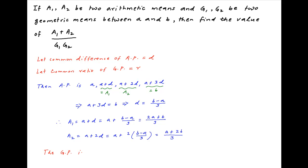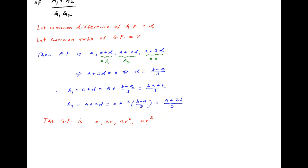Moving on to the geometric progression, the first term is a, the next term is a times the common ratio r, then ar squared, and finally ar cubed. The last term is equal to b, and the geometric means between a and b are g1 and g2 respectively. Equating the last term to b, ar cubed equals b, and solving for r we get r equal to (b upon a) raised to the power 1 upon 3.